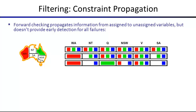There's something more powerful called constraint propagation. Consider a situation where NT has only blue left and SA has only blue left, but they're neighbors. Forward checking doesn't notice — it only backtracks when a domain becomes empty. But we can already see this is impossible. We need a formulation that detects this earlier, which leads us to enforcing arc consistency.